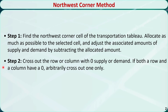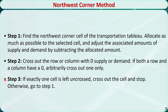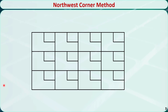In step 2, we will cross out the row or column with zero supply or demand. If both a row and a column have a zero, randomly cross out one only. In step 3, if exactly one cell is left uncrossed, cross out the cell and stop. Otherwise, go back to step 1 and repeat the process.